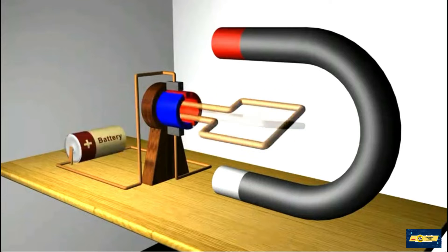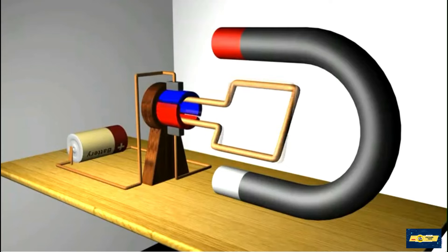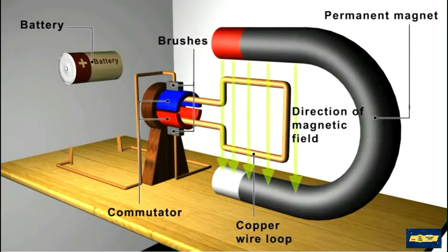The brushes are attached to a wooden support, and the commutator is fixed to the loop of copper wire. The commutator rotates freely, rubbing against the brushes.